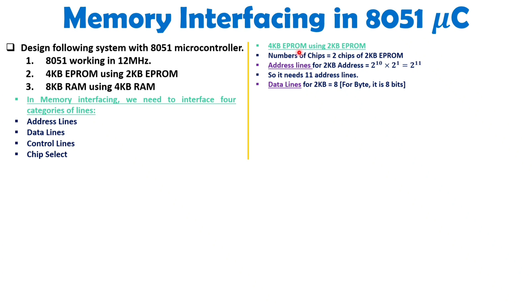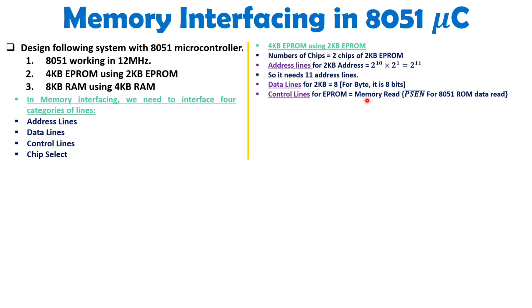For ROM, you only need to read data, so you need a memory read signal. With 8051, for ROM we use PSEN bar, which is used to read data from program memory, and program memory is always ROM.